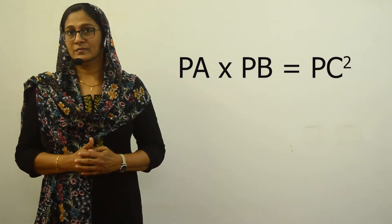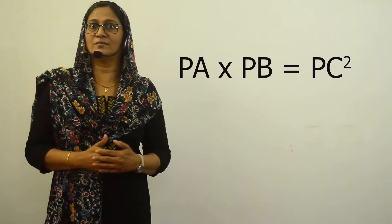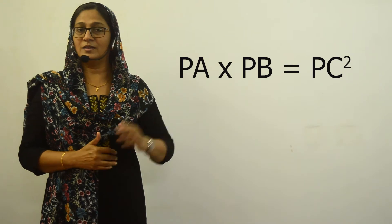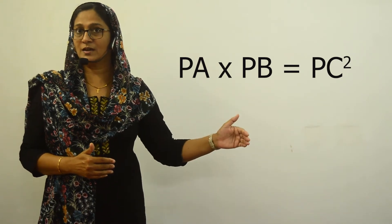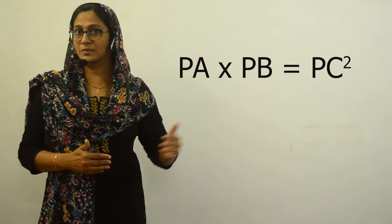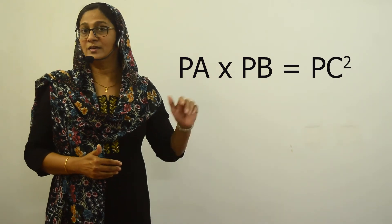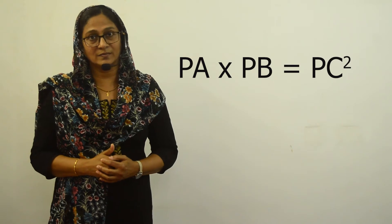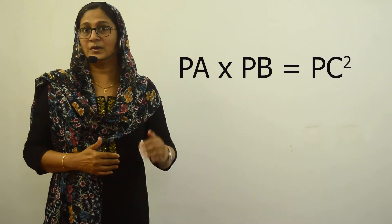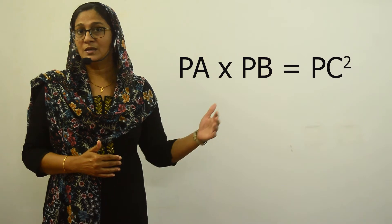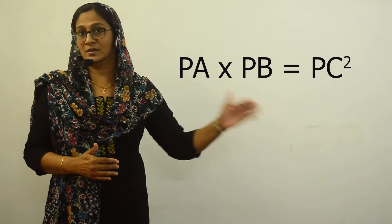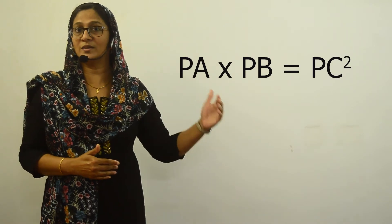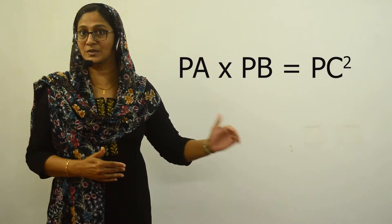PA into PB is the area of a rectangle with sides PA and PB. PC squared is the area of a square with side PC. In other words, we can use this to convert a rectangle into a square of the same area. PA multiplied by PB equal to PC squared also means the area of a rectangle with sides PA and PB is equal to the area of a square with side PC.